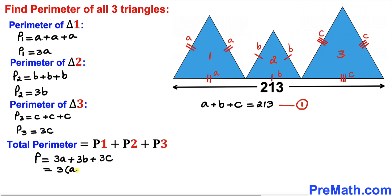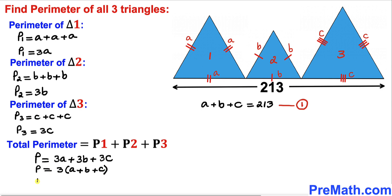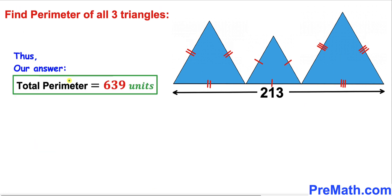So I'm going to factor it out. We get 3 times (A plus B plus C), and we know that A plus B plus C is 213 from equation one. Therefore I'm going to replace A plus B plus C by 213, so P is going to be 3 times 213. So our total perimeter is going to be 639 units. Thus the total perimeter turns out to be equal to 639 units.